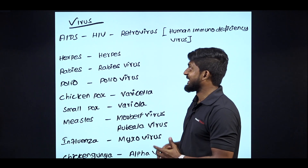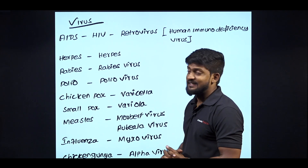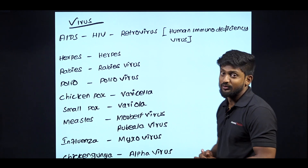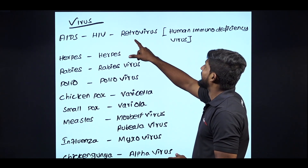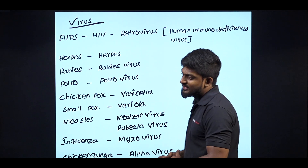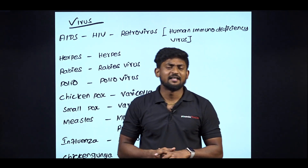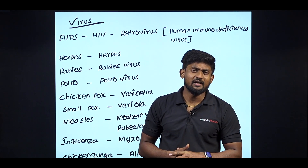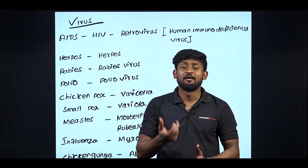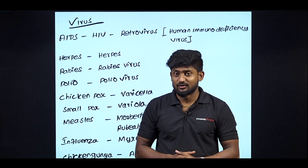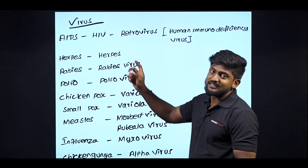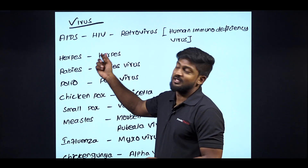First, we have AIDS. We will talk about AIDS and HIV. We will talk about retrovirus. What is retrovirus? It contains only RNA, and it also produces DNA. This retrovirus is HIV — that is AIDS.